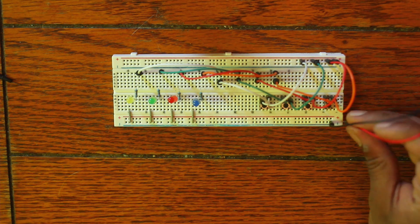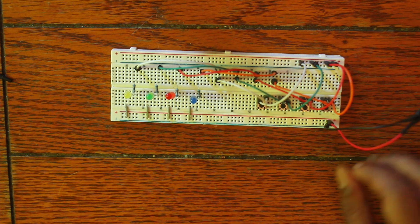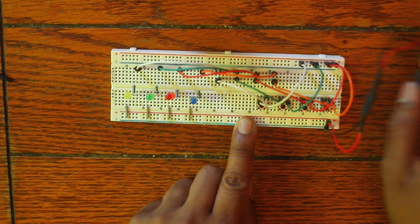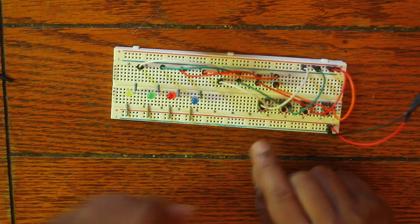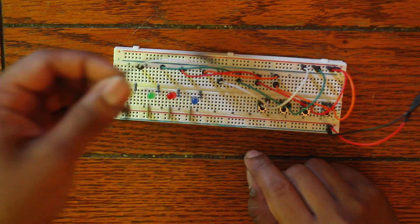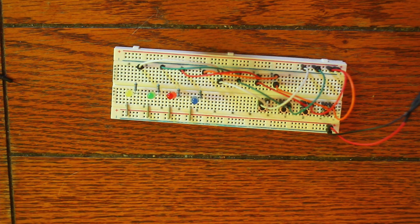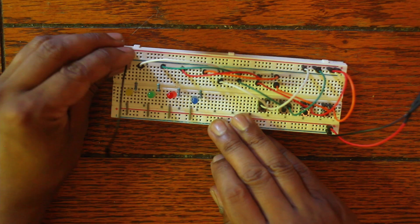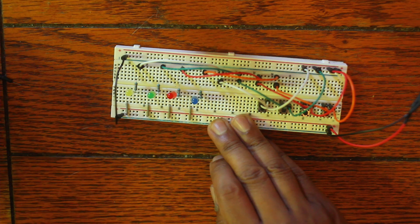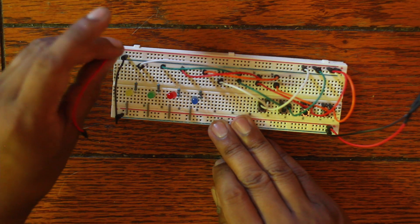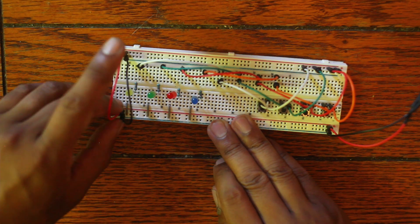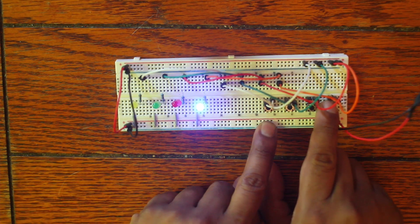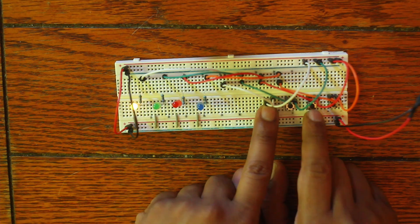Plug in our nine volt, trusty nine volt. Nope, I forgot to connect these two rails. So there's always something. Sometimes always be aware, cognizant. One, two, three, four. Beautiful.